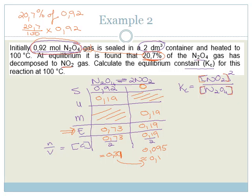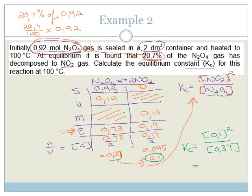Substituting into our KC expression: KC equals 0.1 squared divided by 0.37, which gives 0.027. So the equilibrium constant KC for this reaction is 0.027. A typical exam question is then to ask what this means — this KC value is very small, meaning the equilibrium lies very much to the left and not many products are being produced.